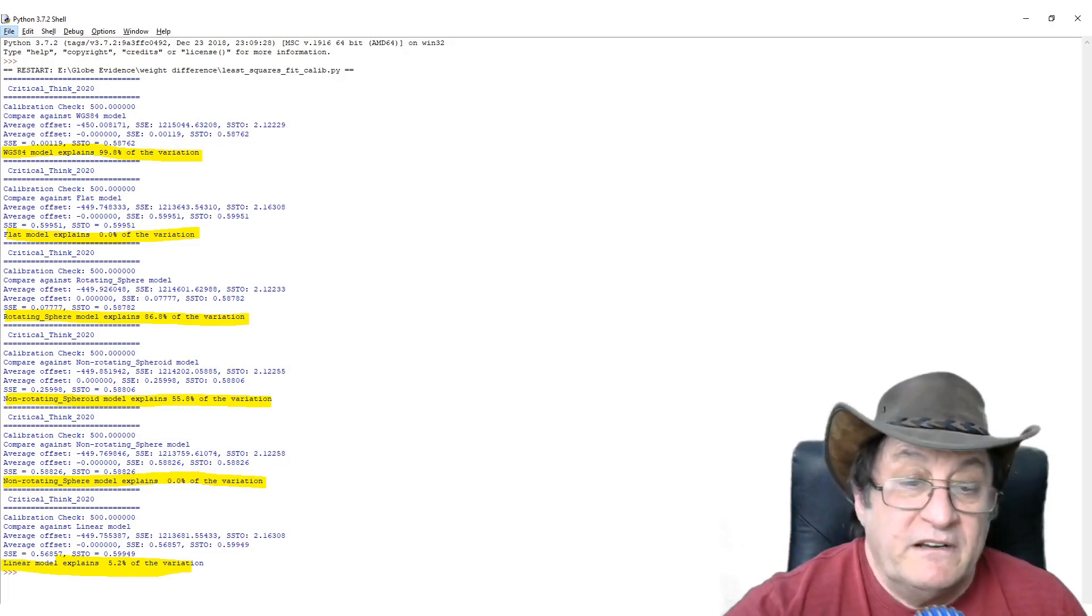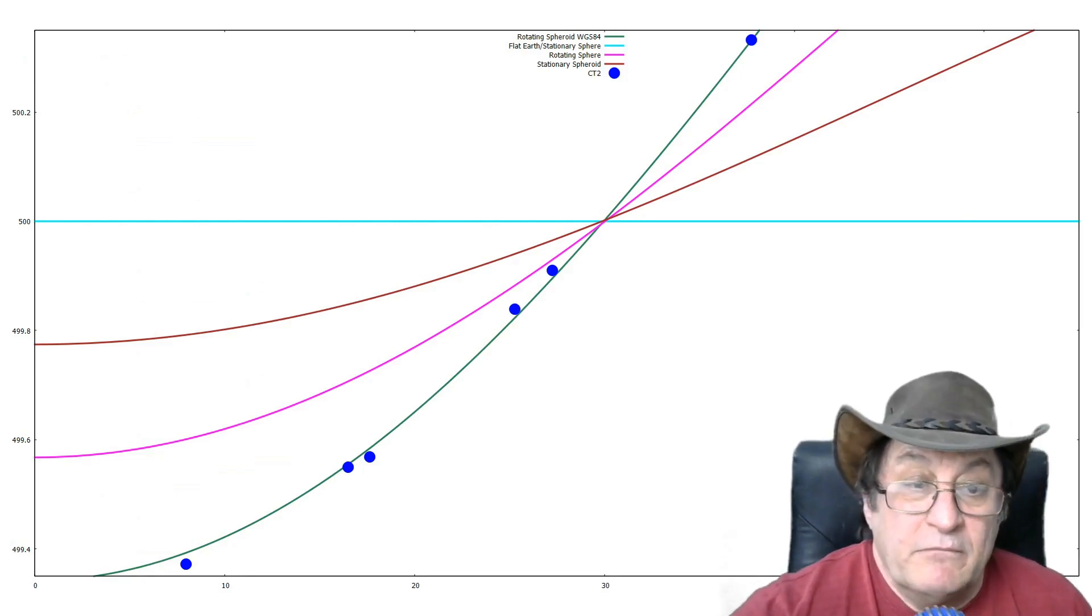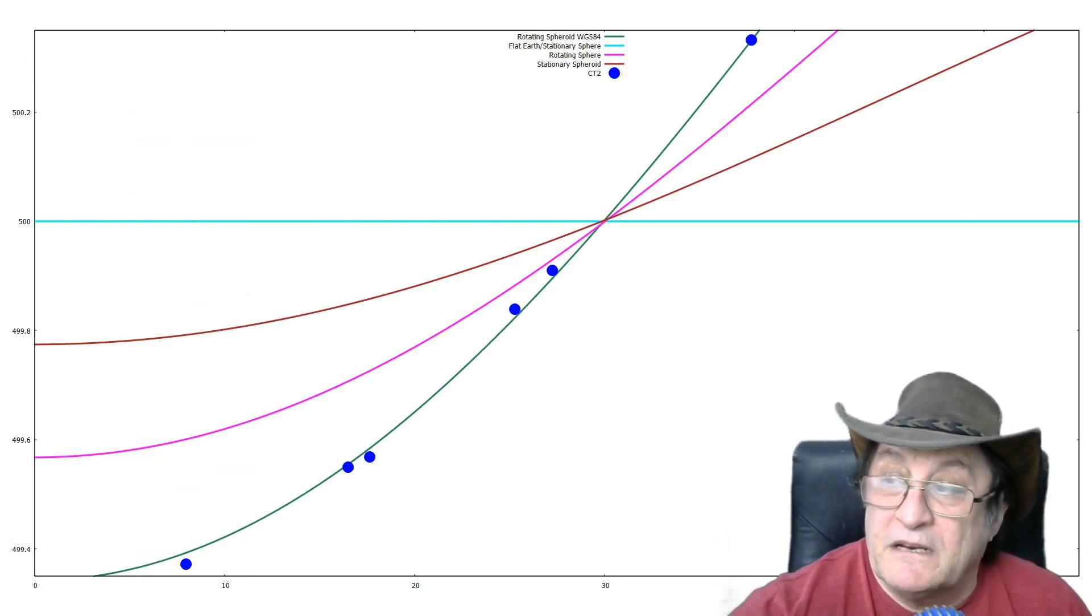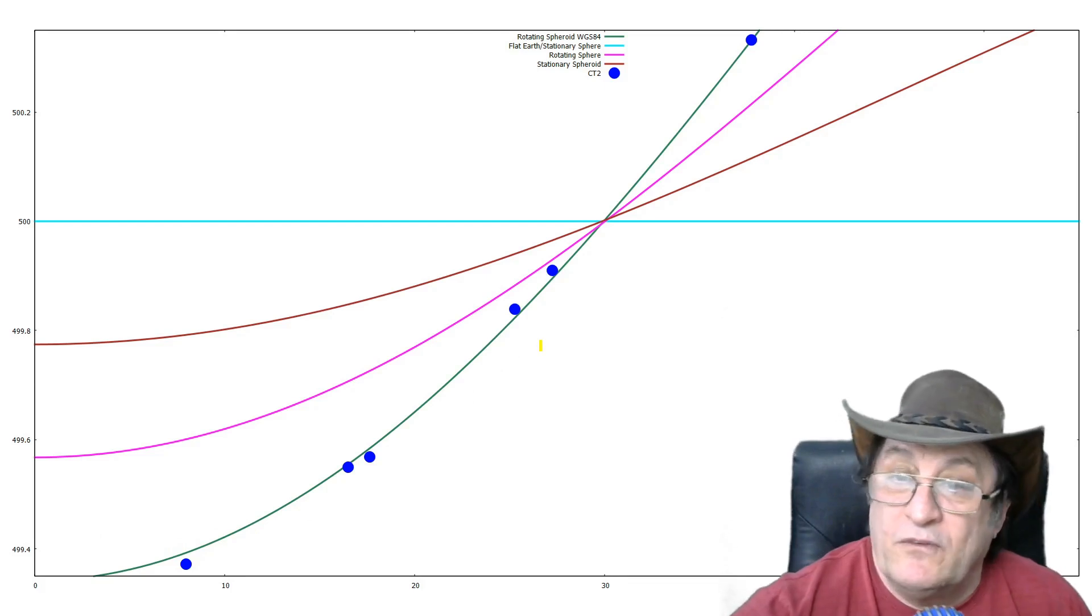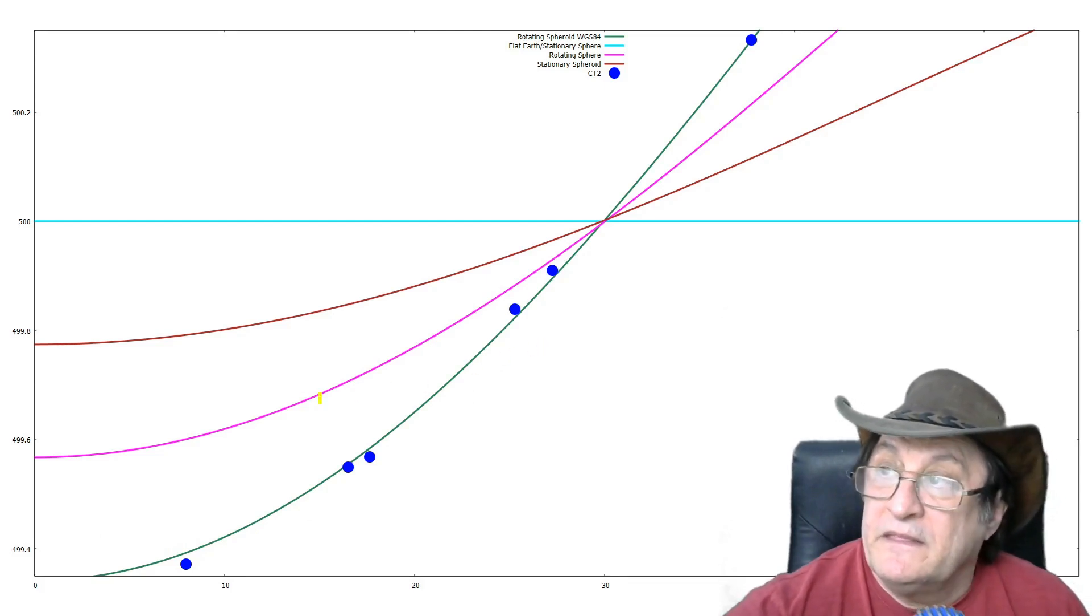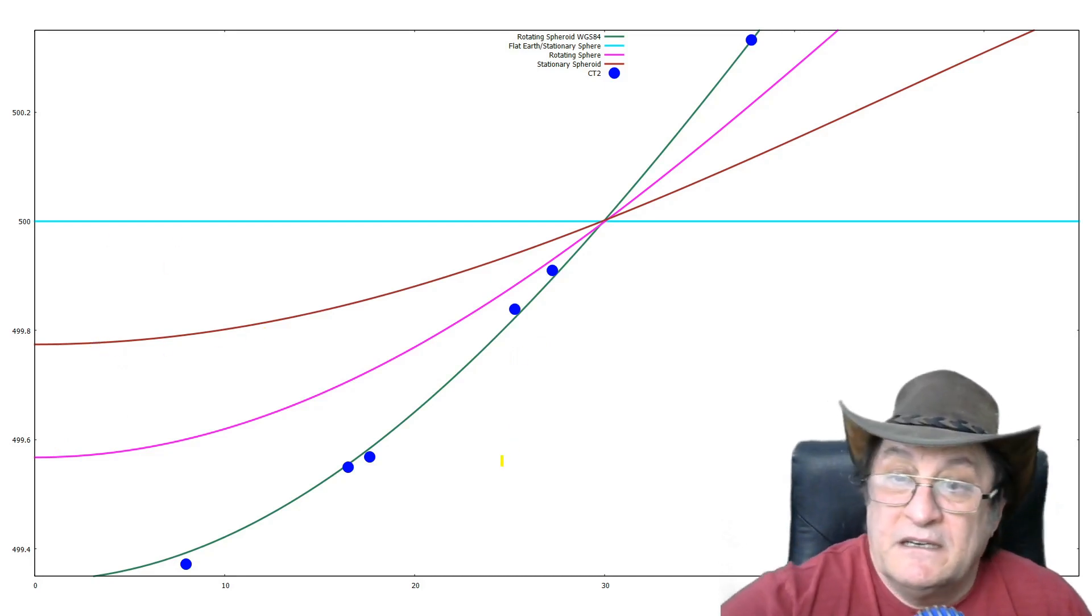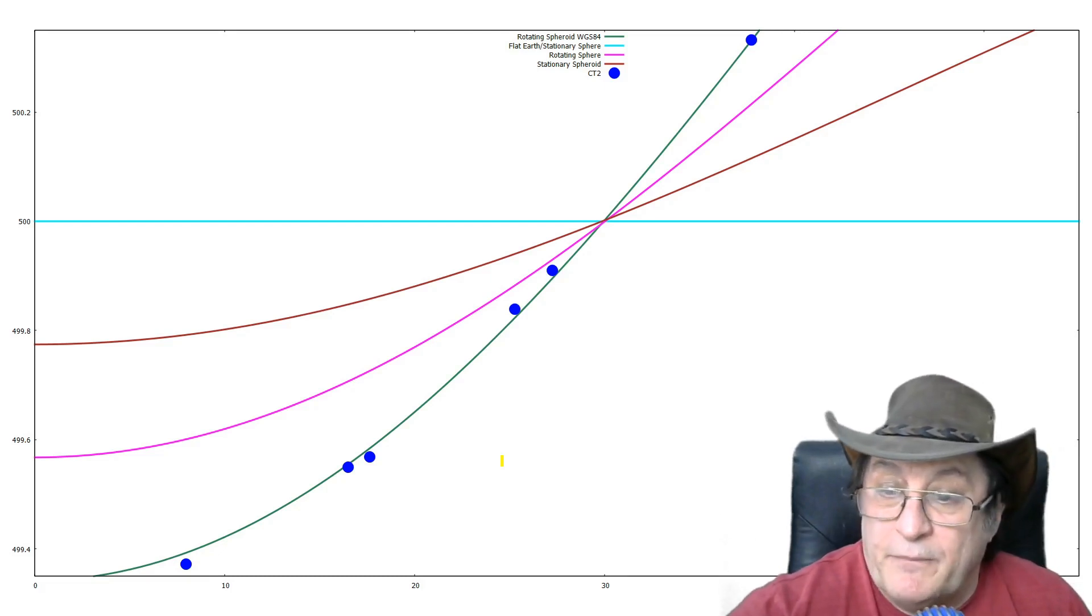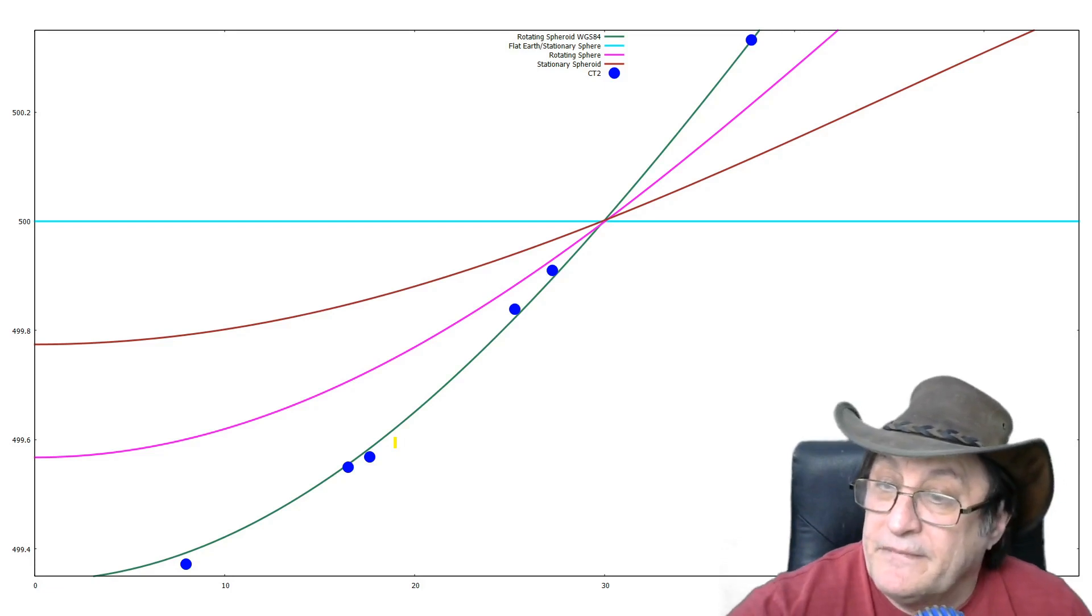So the fact that we measured variation is clear indication of rotation. And I've just got a straight line model, and it's no fit either. So when I plot my results against the different models, this is what I get. Now my new set of results, very, very good fit to the WGS84 model. And then there's the rotating sphere, stationary spheroid, flat earth. You can see that the results fit very, very well with the rotating spheroid.